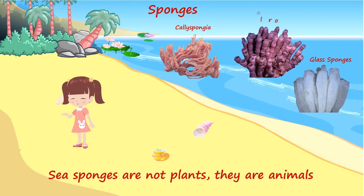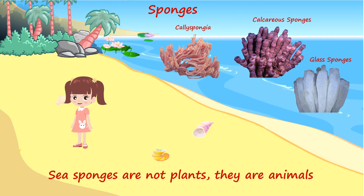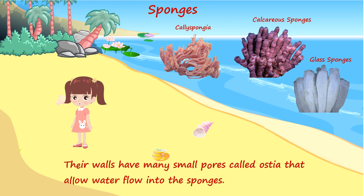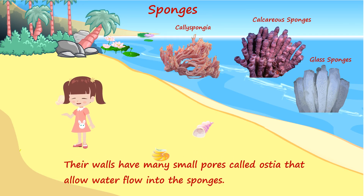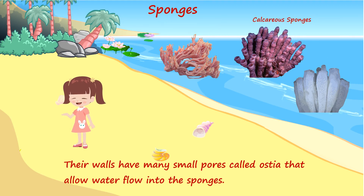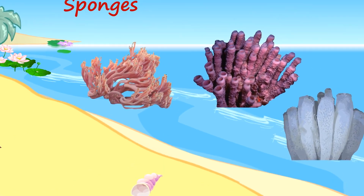Sponges. Sea sponges are not plants, they are animals. Their walls have many small pores called ostia that allow water to flow into the sponges.